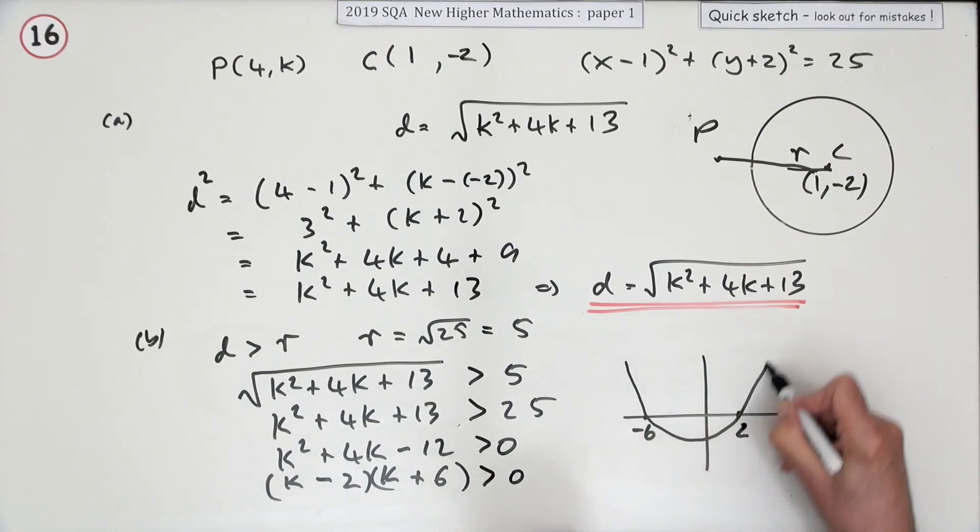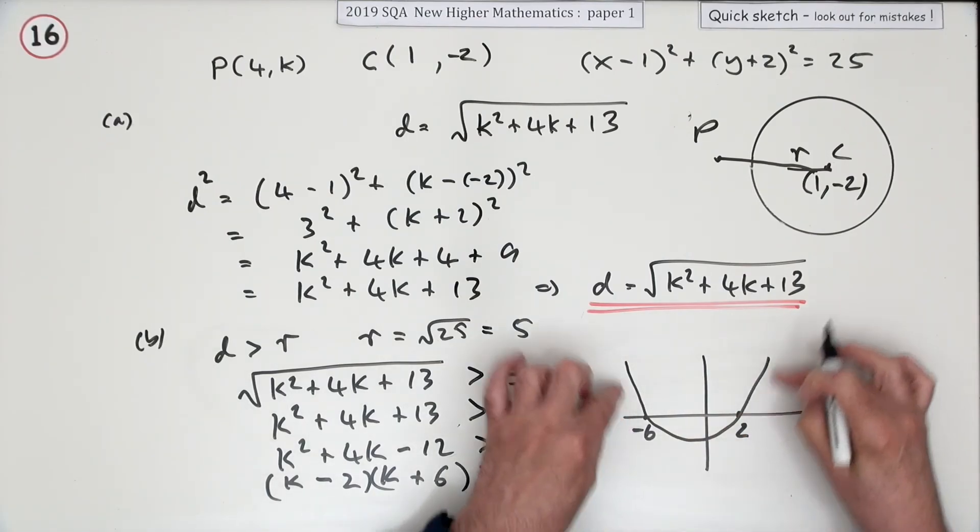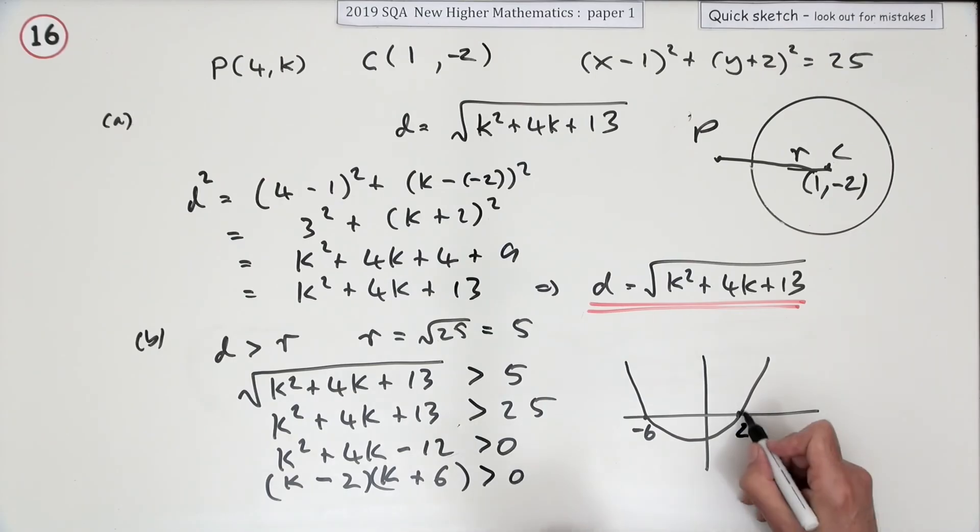So the graph would look like this. That's a picture of the answers. When are you positive, greater than 0? Well, not at 2, but anything greater than it. Not at -6 because it is 0 there, but anything less than it—those give you positive answers. So the final answer is this: either K is less than negative 6, or K is greater than 2.